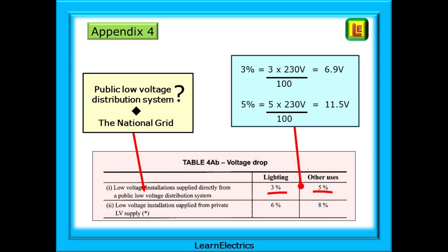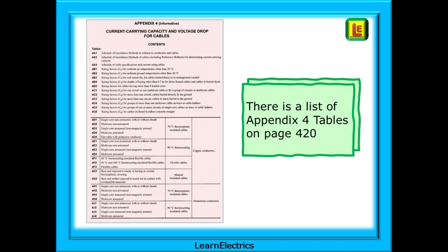As just mentioned, this table often features in exam questions. There is also a list of all but a couple of the Appendix 4 tables on page 420. The top half of the page is predominantly about rating factors, and the bottom half of the page is data for specific electrical cables. And we can take a look at these now.